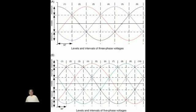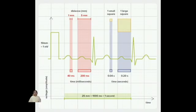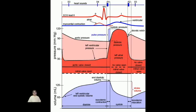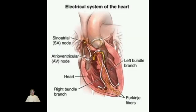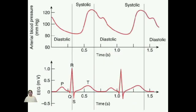During systole, the heart contracts to pump blood into the arteries. This is reflected in the ECG as a QRS complex. The Q-wave marks the beginning of ventricular depolarization, followed by the R-wave, representing the peak of electrical activity during ventricular contraction. Finally, the S-wave signifies the completion of ventricular depolarization.